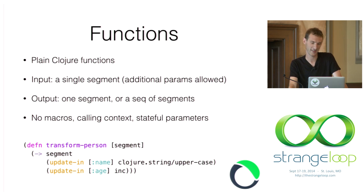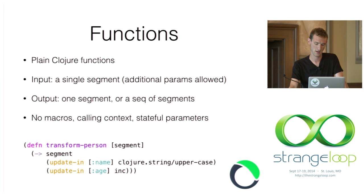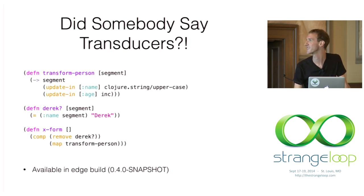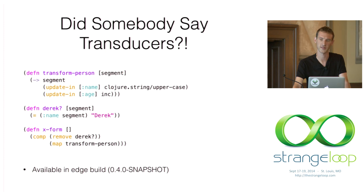The next thing is functions. Expressions in Onyx are plain Clojure functions — no macros, no state, no dynamic scoping. As inputs they take a single segment (a map), and they output a segment or a sequence of segments. And yes, you can use transducers: if you configure your application as such, you can indicate that a function returns a transducer to process a sequence of segments, meaning you can use your transducer on core collections, core.async, and then bring it over to Onyx unchanged.